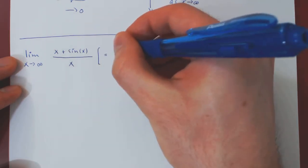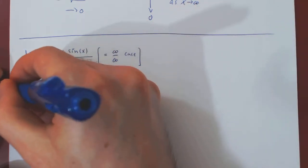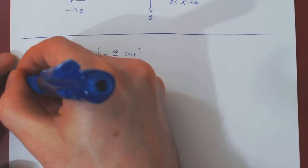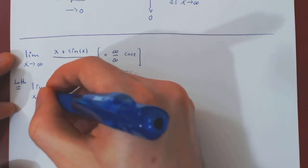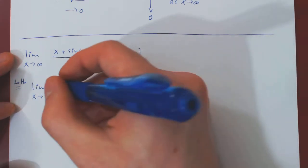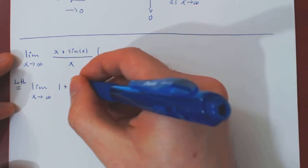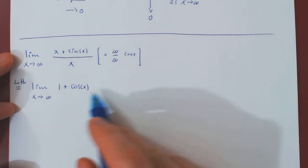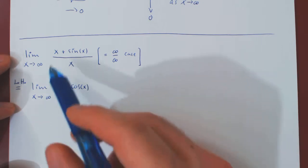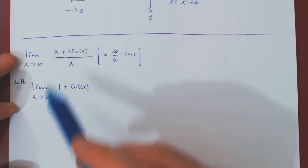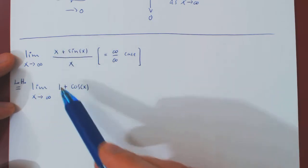So, as we have just said, the case is infinity over infinity. So, we can try to apply L'Hopital's rule. So, the derivative of x plus sine of x is 1 plus the derivative of sine, which is cosine, over the derivative of x, which is simply 1. So, after an application of L'Hopital's rule, the limit of x plus sine of x over x becomes a limit of 1 plus cos of x.